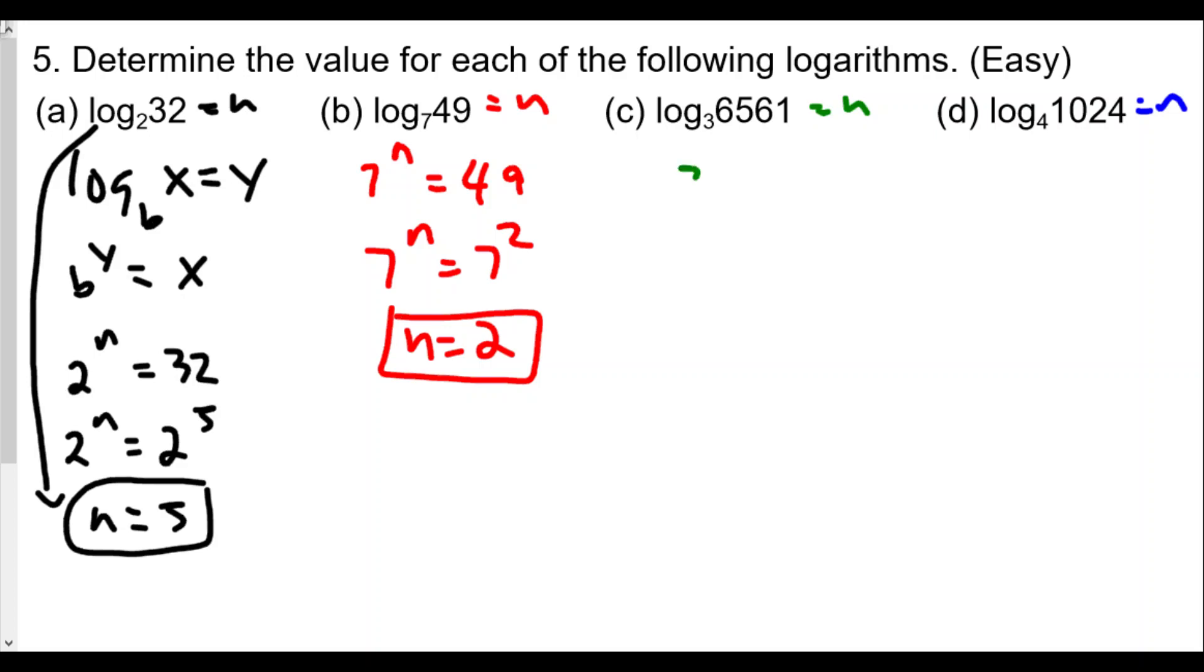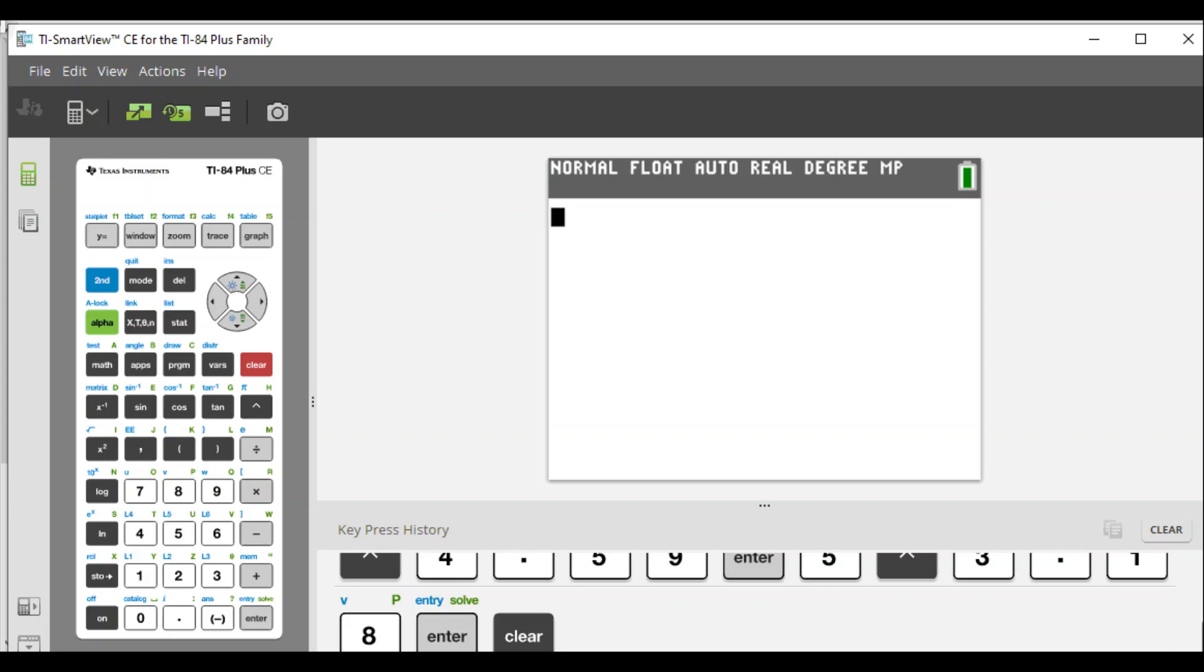Now for c, same thing again. Our base is 3, our exponent will be n. Remember logs are exponents, that's really the key thing to remember. If you ever forget what log is, it's really an exponent in an exponential equation. And so we have here 6,561. Okay, so this is a little bit more tricky. Here we're going to do a little guess and check. Let me pull my calculator. Let's take 3 to the sixth power. 3 to the sixth power is 729, that's too small.